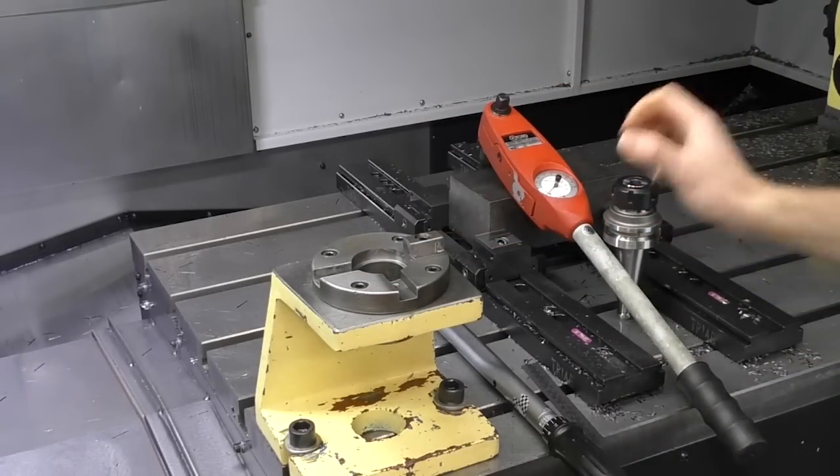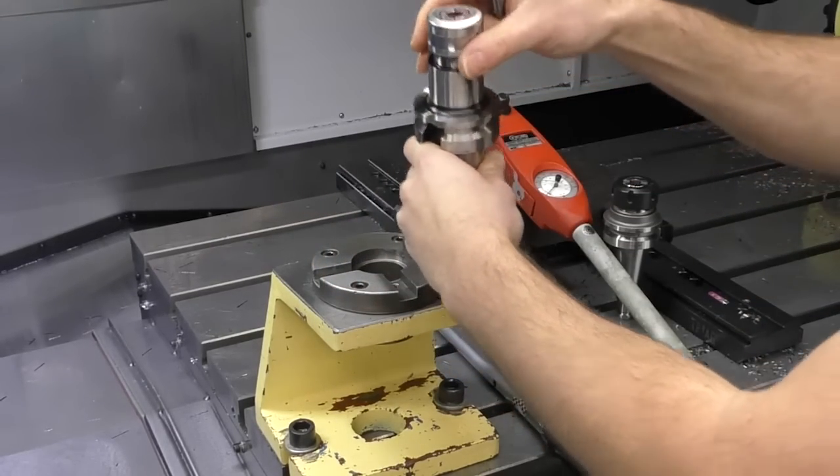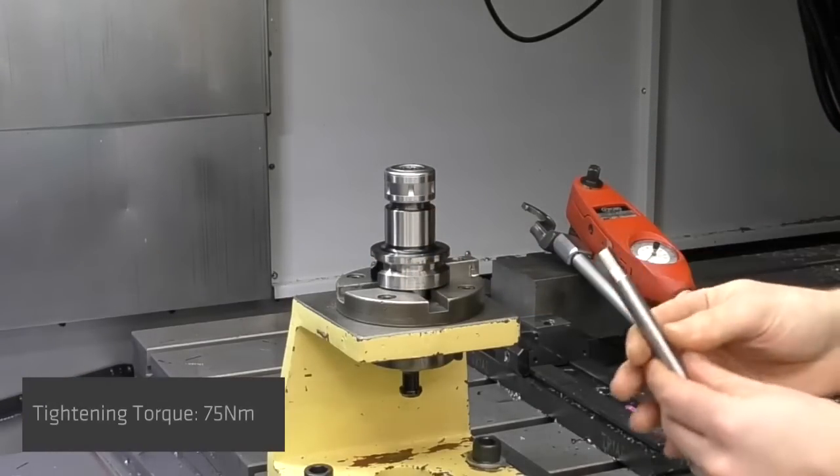So next I'm testing the Nikken slim chuck, and essentially all I'm doing here is repeating the entire test. We're going to go for the same test bar, the same stick out of 50 millimeters, and the same tightening torque.